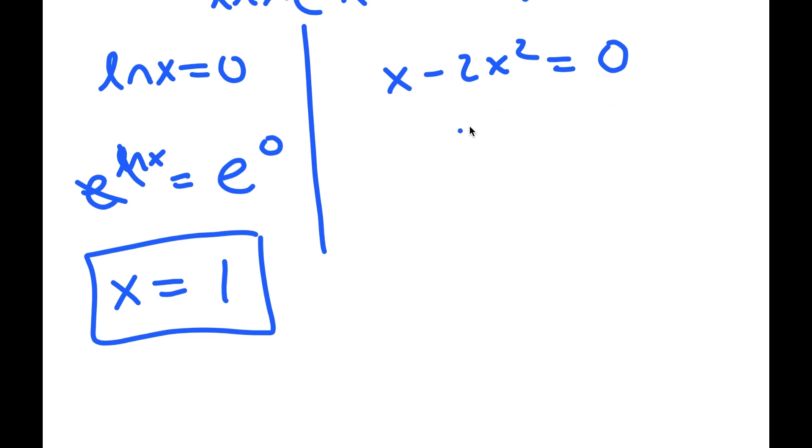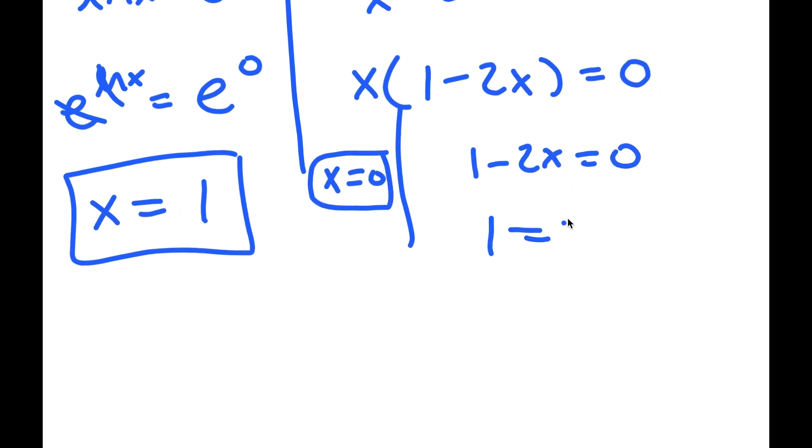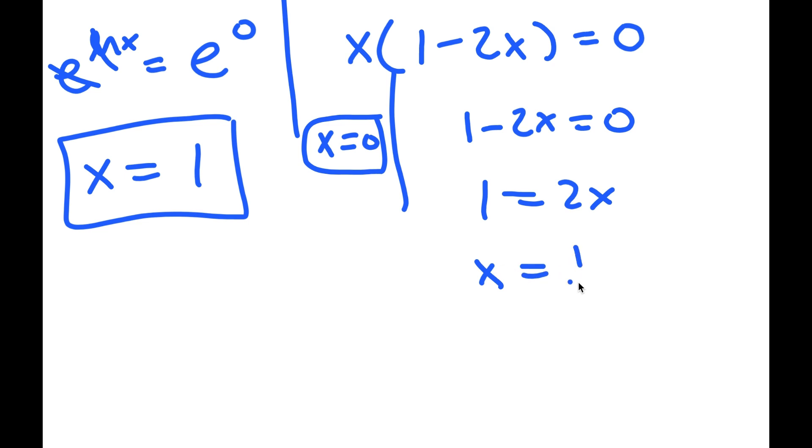For x minus 2x squared equals 0, I'm going to factor out x. So I get x times 1 minus 2x is equal to 0. So this means that x equals 0 and 1 minus 2x equals 0, meaning 1 is equal to 2x and x is equal to 1 half. So these are my three solutions to this equation.